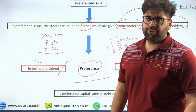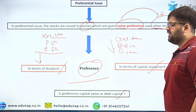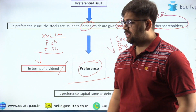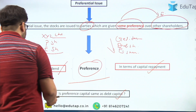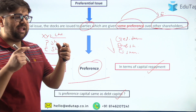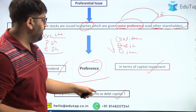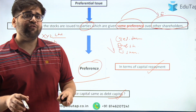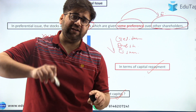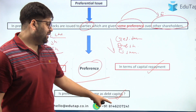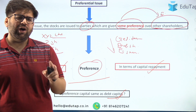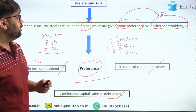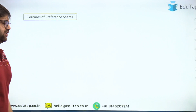A million-dollar question: is preference share the same as debt capital? The answer is completely no. Under preference shares, shareholders are owners of the company, whereas those holding debt capital are creditors. Another key difference is that under preference shares we pay dividend, but under debt we pay interest. These are the two most important differences between debt and preference shares.